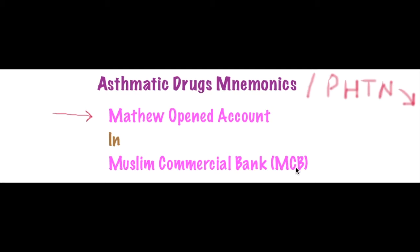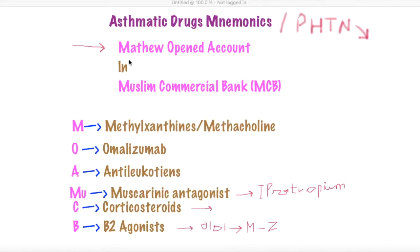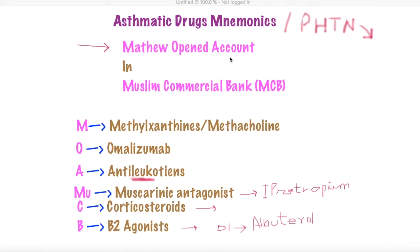Now we're going to integrate this mnemonic. From 'Matthew,' we have M, which stands for methylxanthines or methacholine. Then 'opened' gives us O, which represents ipratropium.